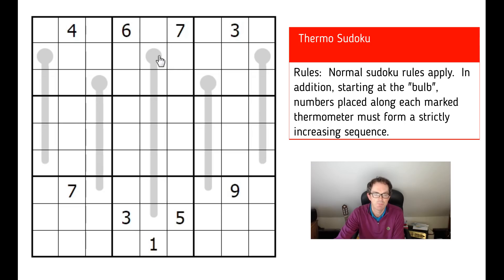And the simple rule is that when we move along the thermometer from its base, so this is the bulb, is the base where the mercury would be. As you go up the thermometer, you must increase in numbers. We have to have smaller numbers at the top here, bigger numbers at the bottom, and that applies to all of the thermometers.